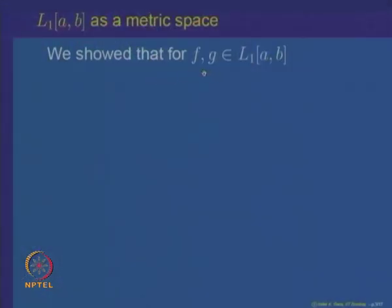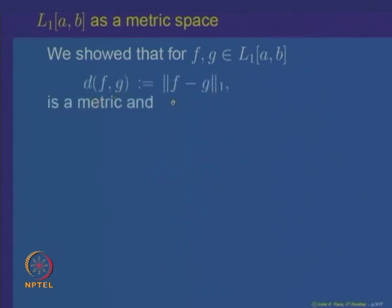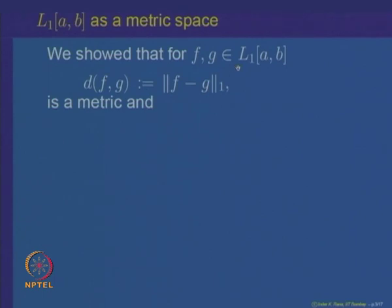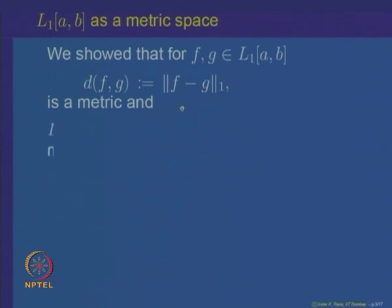Let us recall the L1 metric. For functions f and g in L1(a,b), we defined the distance between f and g to be the L1 norm of f minus g, which is precisely equal to the integral of |f − g| dλ over the interval [a,b]. We showed that if you identify functions almost everywhere — that is, if you do not distinguish between functions f and g which are equal almost everywhere — then this becomes a metric, and the space L1(a,b) is a complete metric space under this metric.